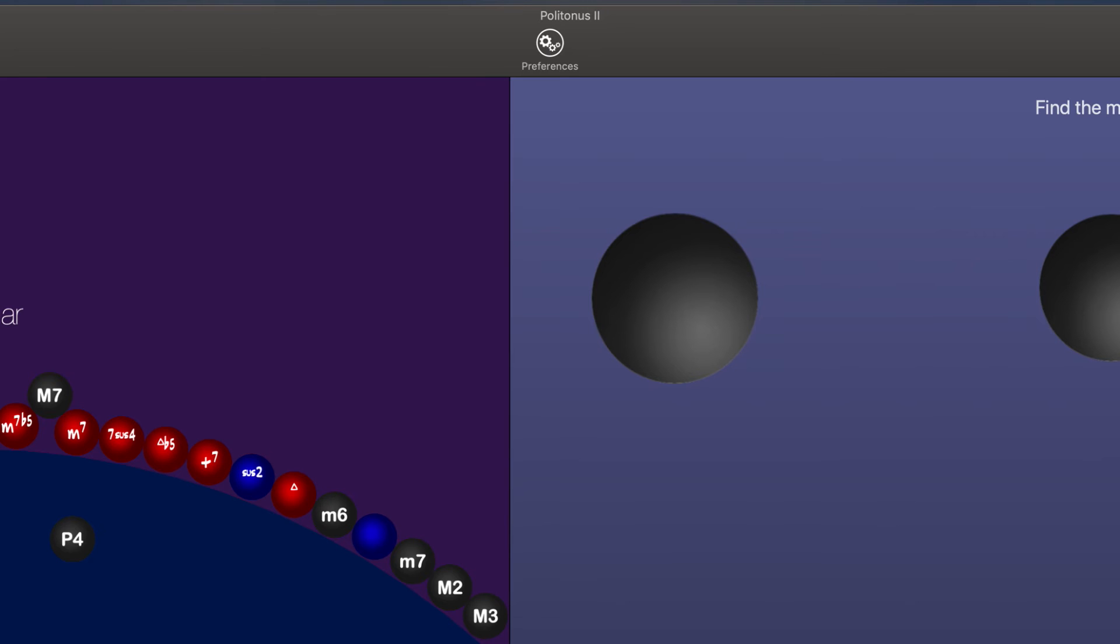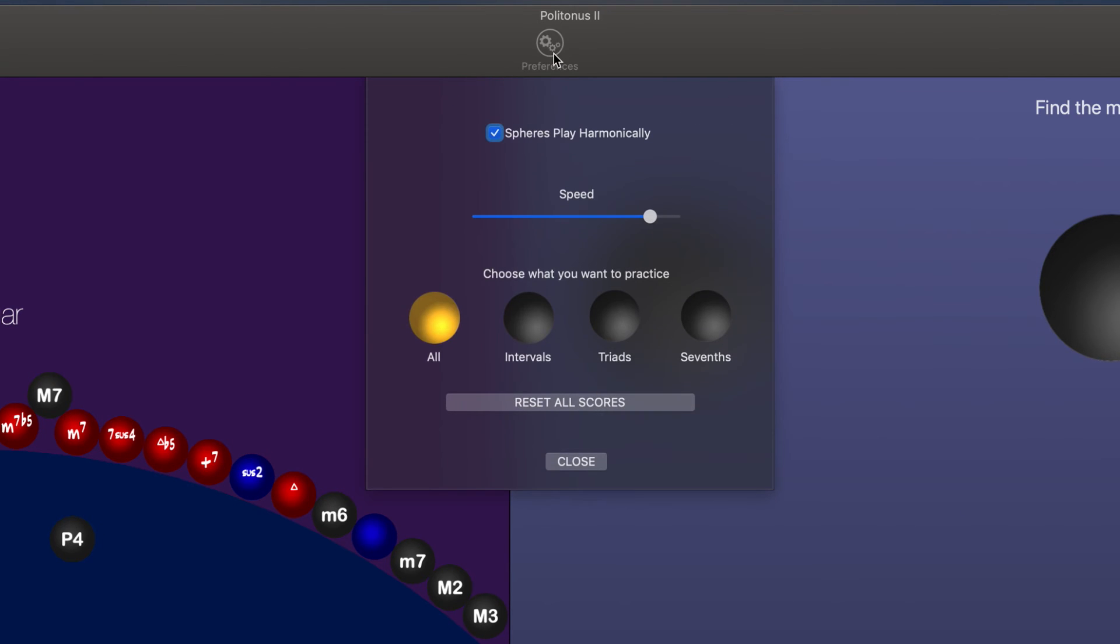Up at the top of the screen here we have our preferences panel. This is going to allow us to change a few features within the app, like how fast these intervals will play from one note to the next if I wanted to go quickly or slowly. And as we saw before, the playing the spheres harmonically versus melodically option right there.